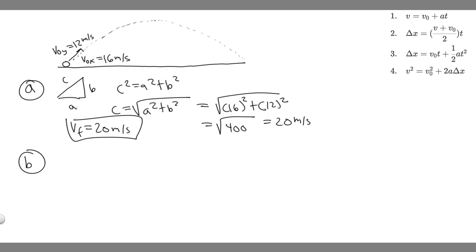Now for Part B, we're trying to find how long the ball remains in the air. We'll use kinematics. The key trick is that at the maximum point, the final velocity in the Y direction is zero. So if we can find how long it takes to reach the highest point, we just multiply by two to get the total air time. We'll use V-sub-Y equals V-sub-0-Y plus A-sub-Y times t, focusing on the Y direction where the final velocity is zero.